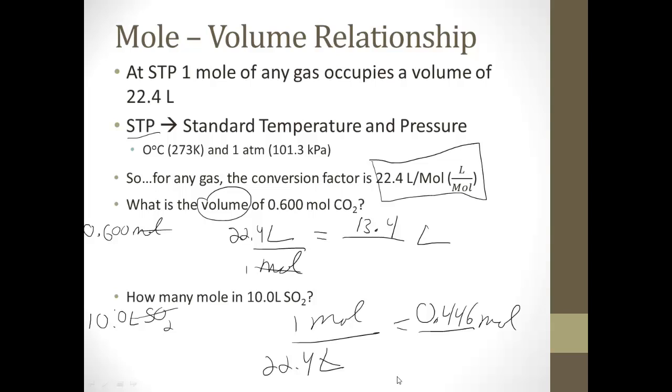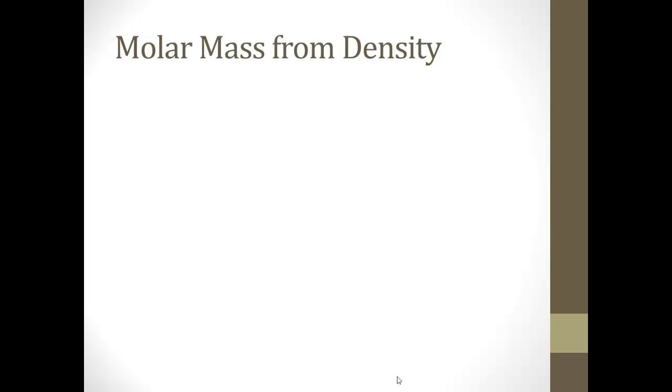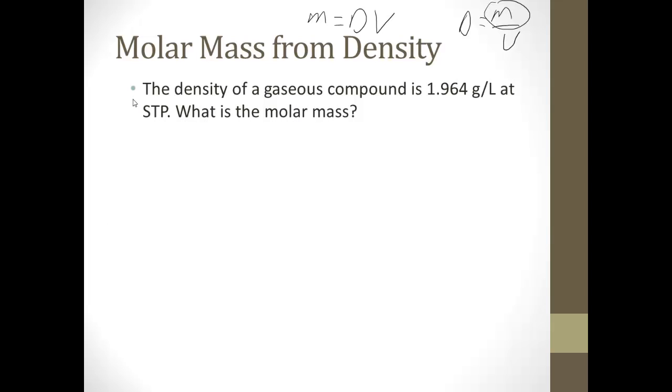Now, we can also do molar mass from density. All right, if you remember it's in your reference table. D equals M over V. Okay, so the mass of something is equal to the density times the volume of something. So, let's say the density of a gaseous compound is 1.964 grams per liter at STP. What is the molar mass? Okay, so now it gets a little trickier. 1.964 grams per liter. Okay, and we want, at the end here, grams per mole.